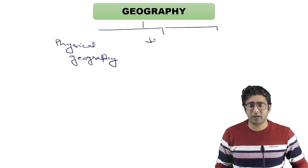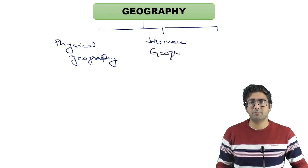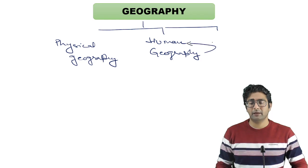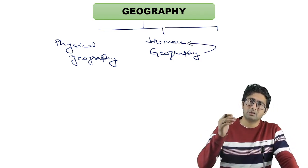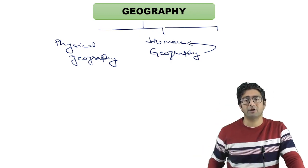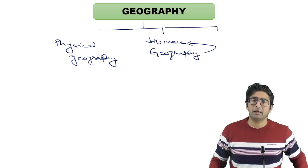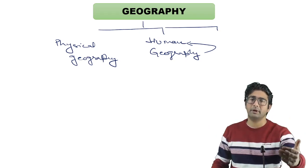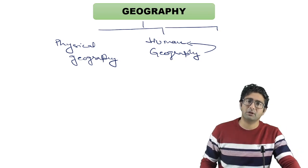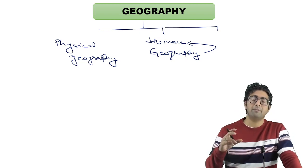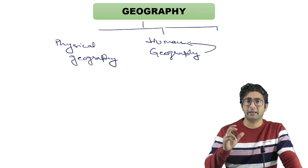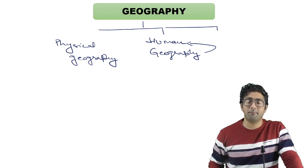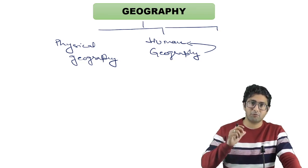The second branch proposed by the commission is Human Geography. Human Geography is made up of two words — human and geography. Until now geography meant only the physical aspect, but when the dimensions of geography were widened, we began studying how physical aspects affect humans — that is called Human Geography. For example, if I live in a zone with warm or subtropical climate, like Chandigarh at 30 degrees North latitude, the climate has moderate winters and summers.